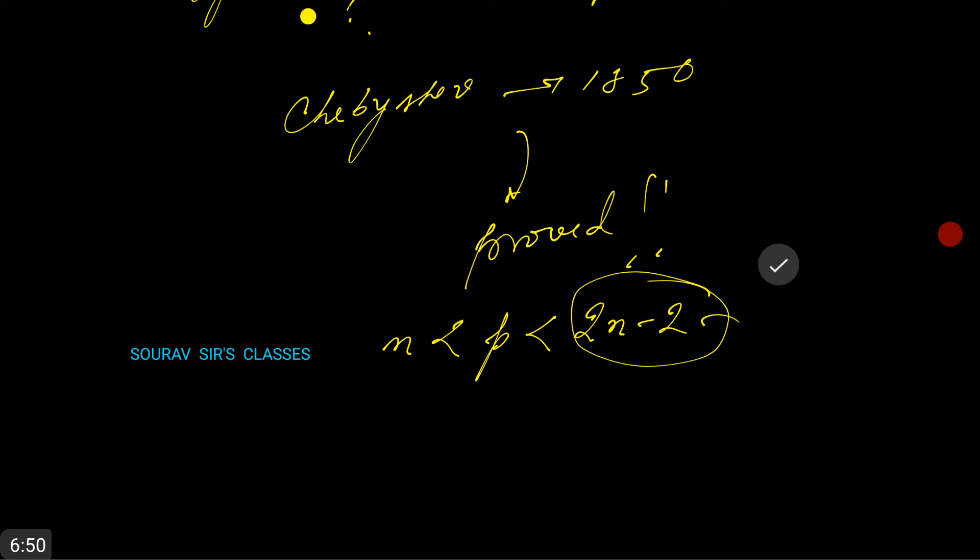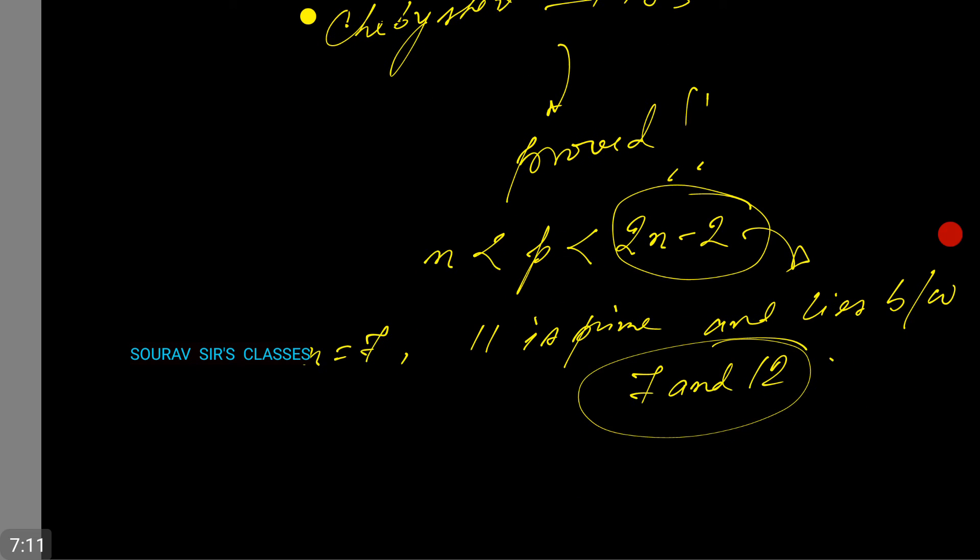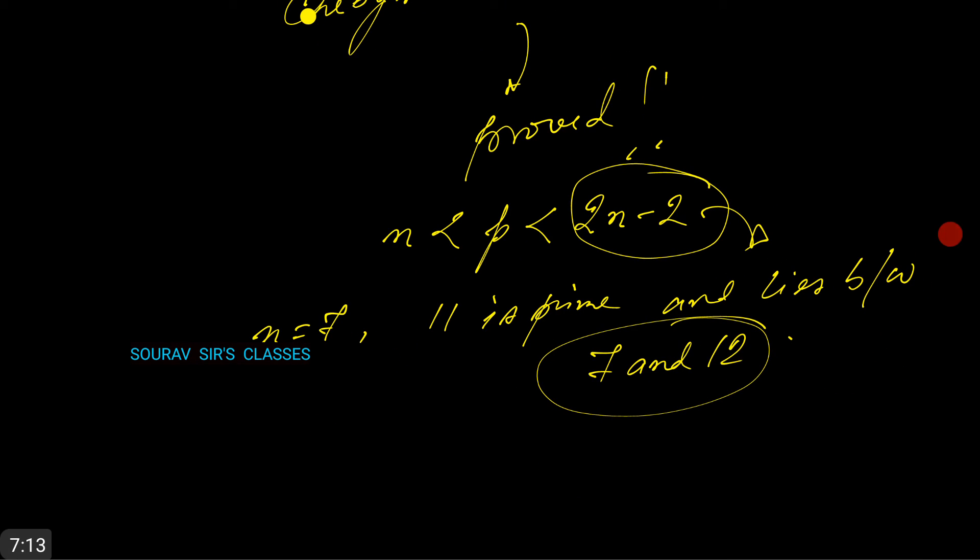And you can check, for example, n equals 7: the number 11 is prime and lies between 7 and 12. I guess that's it, so thanks for watching.